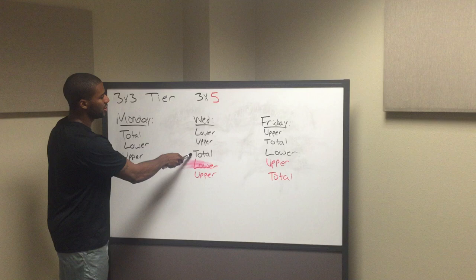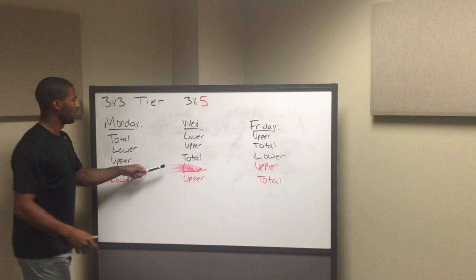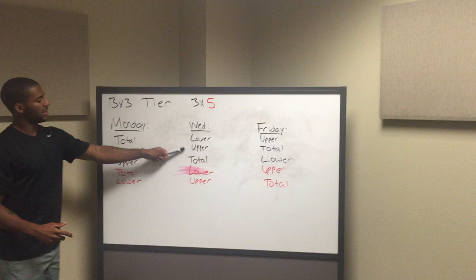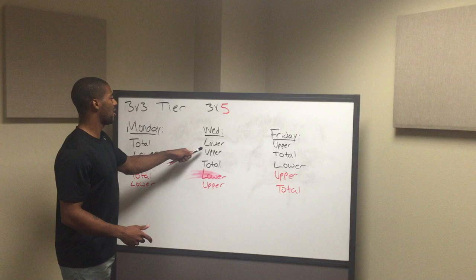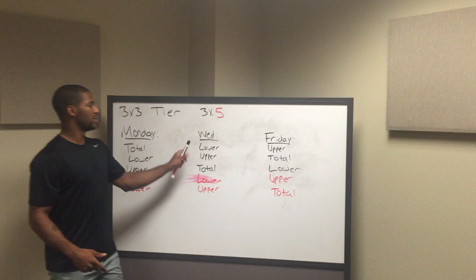If you want to do a three-by-five, you go total, lower, upper, total, lower, and so on. If you want to do a three-by-seven, you just add more — for example, it goes total, lower, then upper, then back to total. But it always starts the next day with your second movement. So we start on total, go lower, and then start lower the next day, go upper. I'll explain that when we go to talk about how to program this for the week.